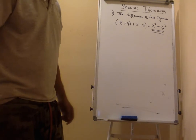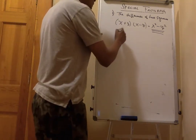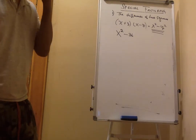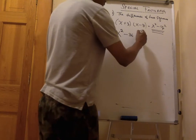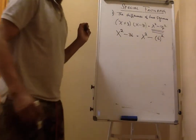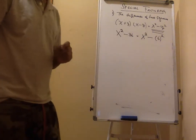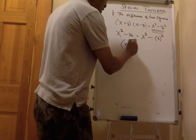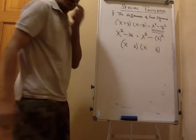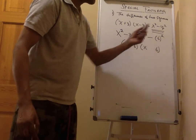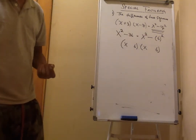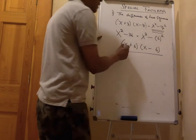Suppose you have x squared minus 36 — this is an example of the difference of two squares with two binomial factors. You have x squared and 6 raised to the second degree. Since x is to the second degree and 6 is to the second degree, x and 6 appear in each factor, because x times x is x squared and 6 times 6 is 6 squared. The minus sign separating them means one factor is plus and the other is minus: (x+6)(x-6).